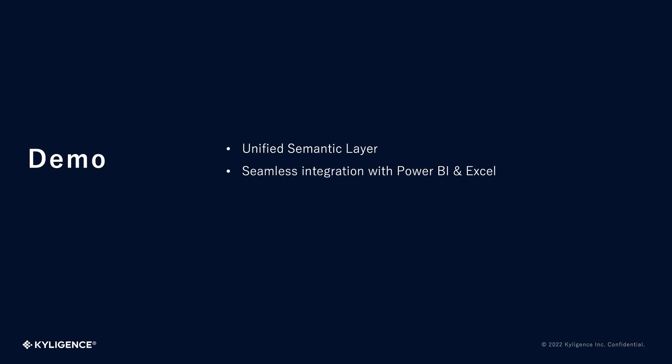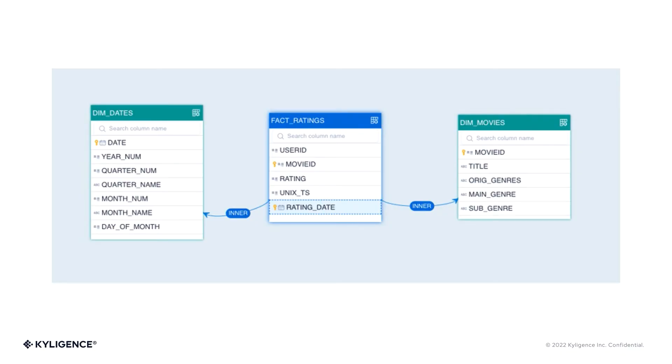We've introduced the Kyligence solution and how it solves the various challenges faced by SSAS users. Now I'd like to have my colleague Sean give a live demo to show how Kyligence looks like. Thanks, Kai. Hello, everyone. My name is Sean, and I'm a senior solutions architect at Kyligence. Today, I'll be demonstrating the Unified Semantic Layer — a non-parallel Kyligence feature — and how to seamlessly connect to it using your favorite BI tools such as Excel and Power BI. The dataset used in this demo contains movie rating data for movies released in the past two decades.